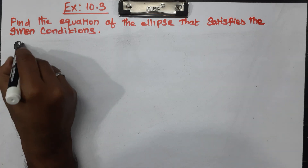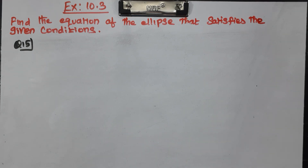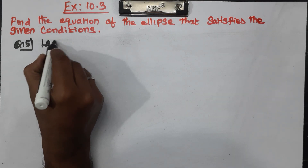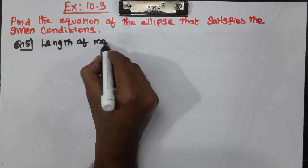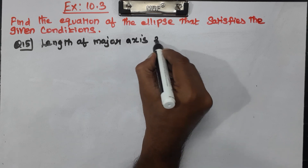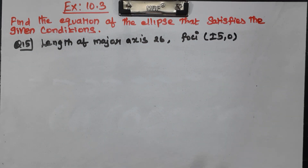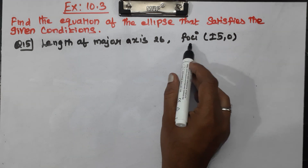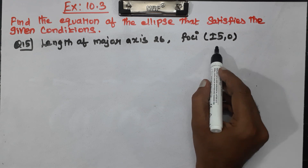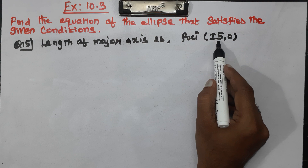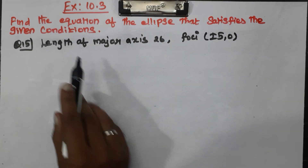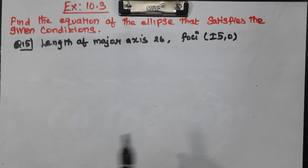Question Number 15: the length of the major axis is 26, and the focus is at plus or minus 5, 0. Since the focus is at C, 0 — that is, plus or minus C, 0 — the major axis is along the x-axis. The length of the major axis is 2a and the length of the minor axis is 2b.